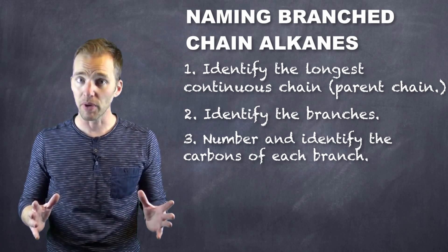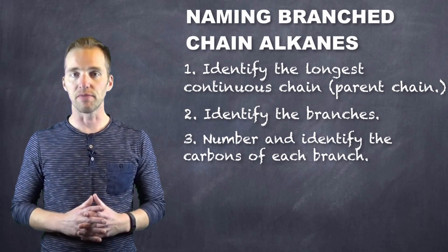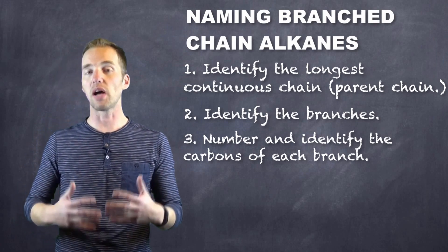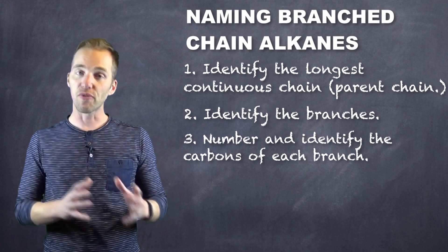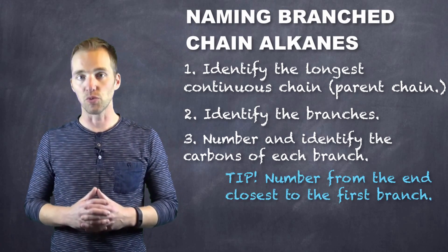Now, how do we know what number they are? Well, the general rule is we want to have a combination of numbers so that they are the lowest possible combination. Also, we want to have our first branch being the closest to whichever end we pick as one.